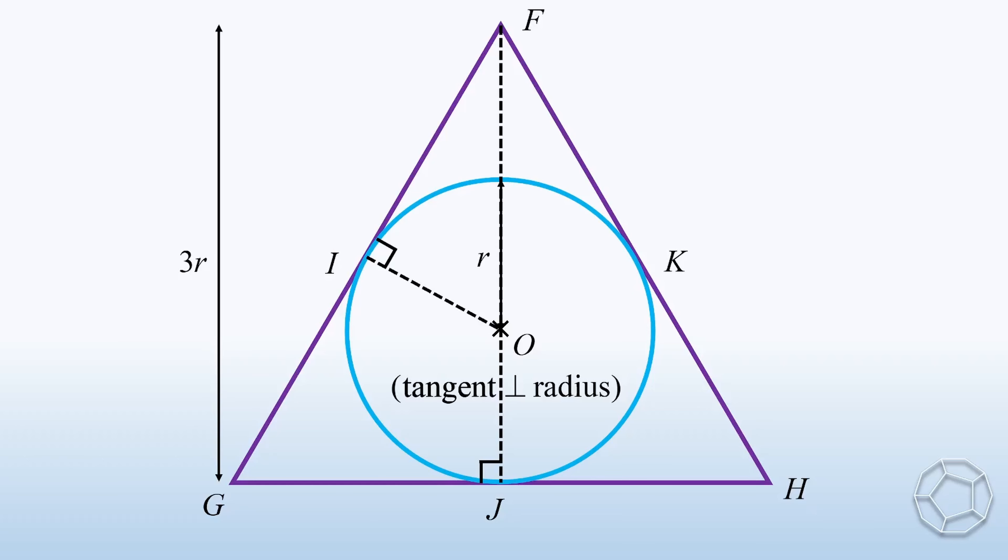What else do we know? Here, OI and OJ are both equal to the radius of the sphere. Because the height of the cone is 3r, the green side OF is equal to 2r. We have to figure out the base radius of the cone, which is the red side GJ. Let the length be capital letter R.